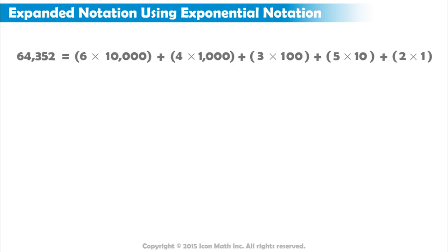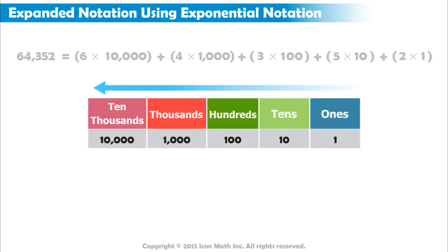As you move to the left in a number, each place has a value 10 times the place on its right. 10 is 10 times greater than 1. So 100 is 10 times greater than 10 and so on.